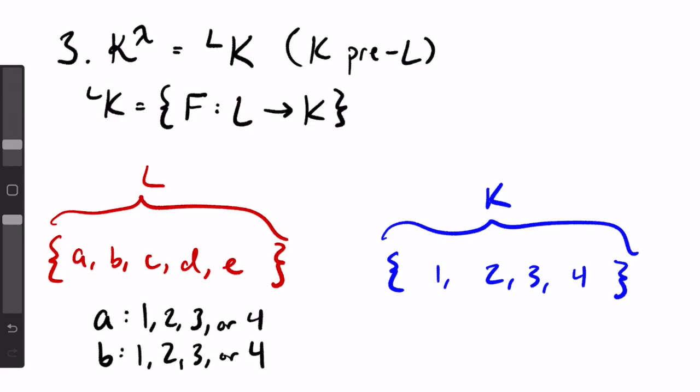Again, we can pick anything in k to pair it with, because the function doesn't have to be one to one, it just has to be well defined, meaning that each element in l has to have some element in k that it maps to. For each of the lambda elements in l, there are kappa elements in k we could choose to pair it with. So the total number of functions from l into k, or the cardinality of k pre l, is kappa times kappa times kappa multiplied lambda times, once for each element in l, or kappa to the power of lambda.